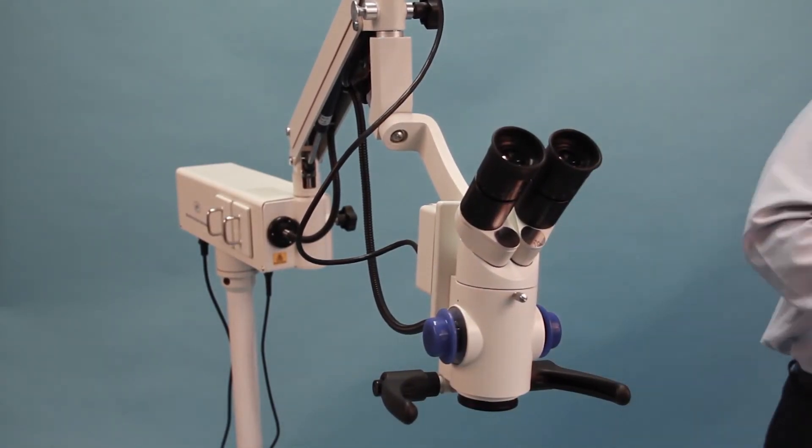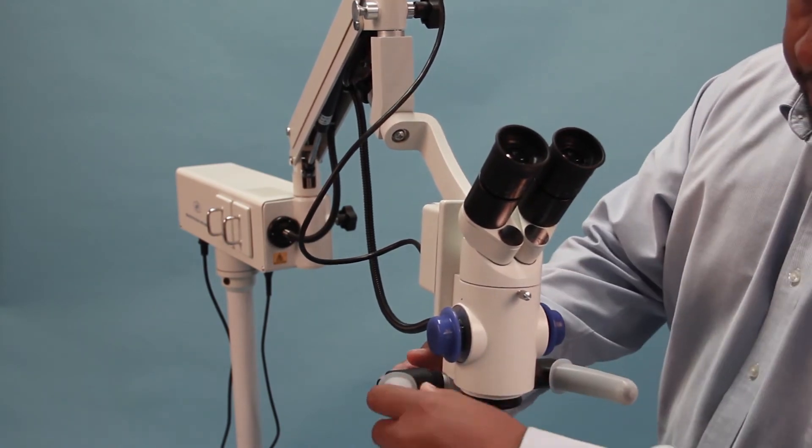Slip the sterilizable covers over the handles. Okay, that's it! Hope you've enjoyed watching our video on how to assemble a binocular sergioscope. Stay tuned to see our next video on how to turn this into a trinocular scope and add a camera. Thanks so much!